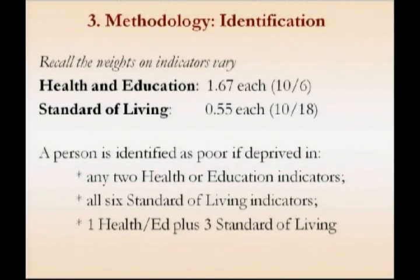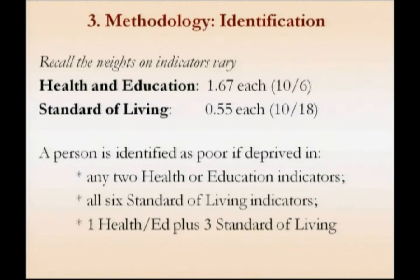What I would like to go through now is particularly the identification step. In describing the indicators, we generated the G0 matrix. For every person, we have the number of those 10 indicators in which they are deprived, and our question is which of those people are multidimensionally poor? For example, I was in Nepal last week and they were singing the benefits of open toilets as a very desirable form. So if you have that as one of your deprivations, you might not consider it a deprivation. Or you might have a low body mass index because you're a fashion model, or you might like to cook with wood and have a separate chimney. Having one deprivation does not necessarily indicate multidimensional poverty.